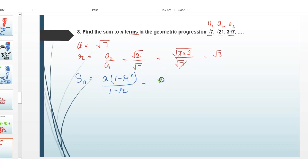We will substitute the values. a is root 7 into 1 minus r raised to power n divided by 1 minus root 3.